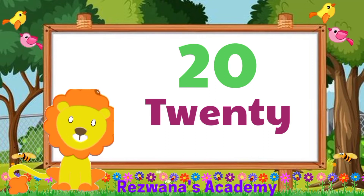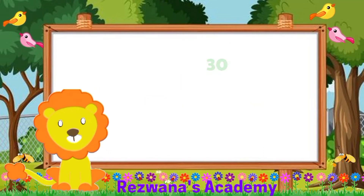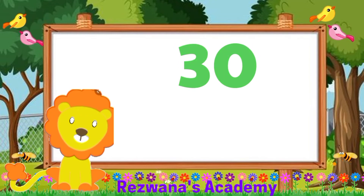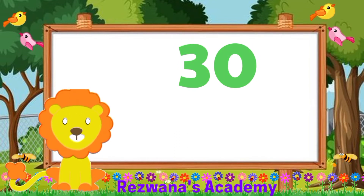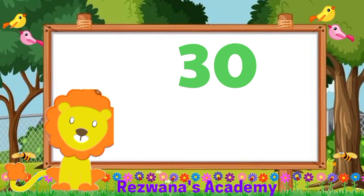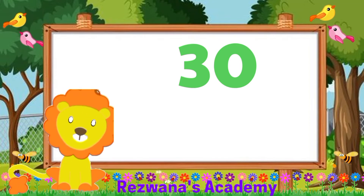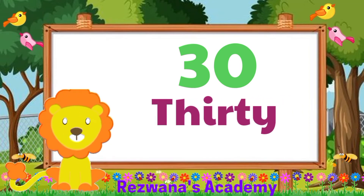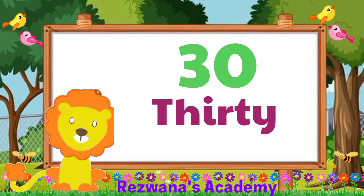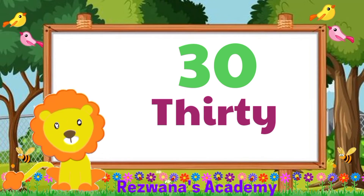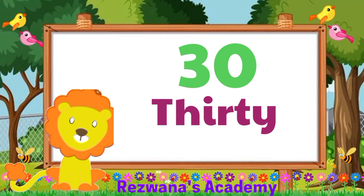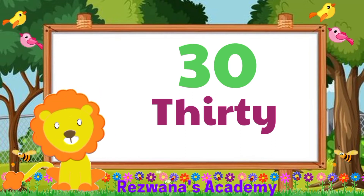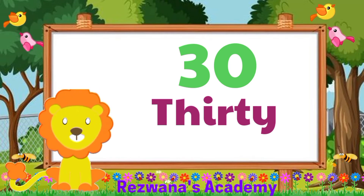Now let's move on to the next one. This is number 30. It is also made of 6 letters. So let's spell it together: T, H, I, R, T, Y. 30. That's great.